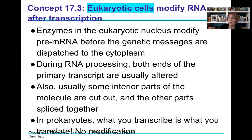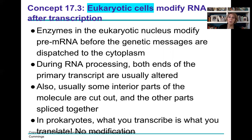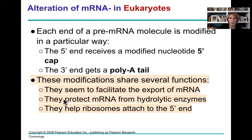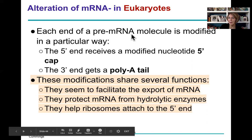Now we'll talk about how in eukaryotic cells you can modify your messenger RNA after transcription. This is called RNA processing, and it happens at both ends and in the middle. In prokaryotes, what you transcribe is what you translate — there's no modification. Make sure you get that in your notes: in prokaryotes, you transcribe what you translate.